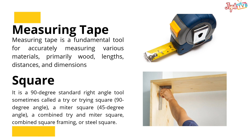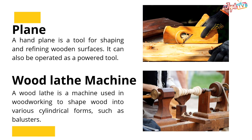Square: A 90-degree standard right angle tool, sometimes called a tri or trying square, a meter square, or a combined try and meter square. Plane: A hand plane is a tool for shaping and refining wooden surfaces. Wood Lathe Machine: A machine used in woodworking to shape wood into various cylindrical forms such as balusters.